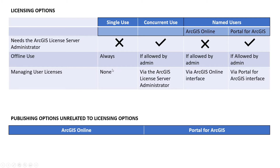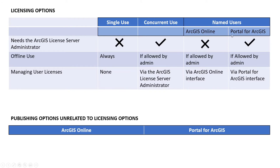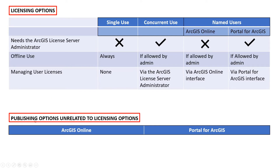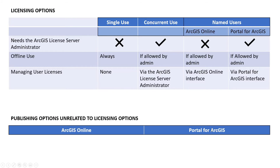The next thing I would like to discuss are the publishing options in ArcGIS Pro when we talk about portals. This is not to be confused with Portal for ArcGIS. I am now talking about the word portals, which can refer to either a licensing portal or a publishing portal. You can publish to either ArcGIS Online or Portal, but your licenses can come from any of these methods — these are completely unrelated.